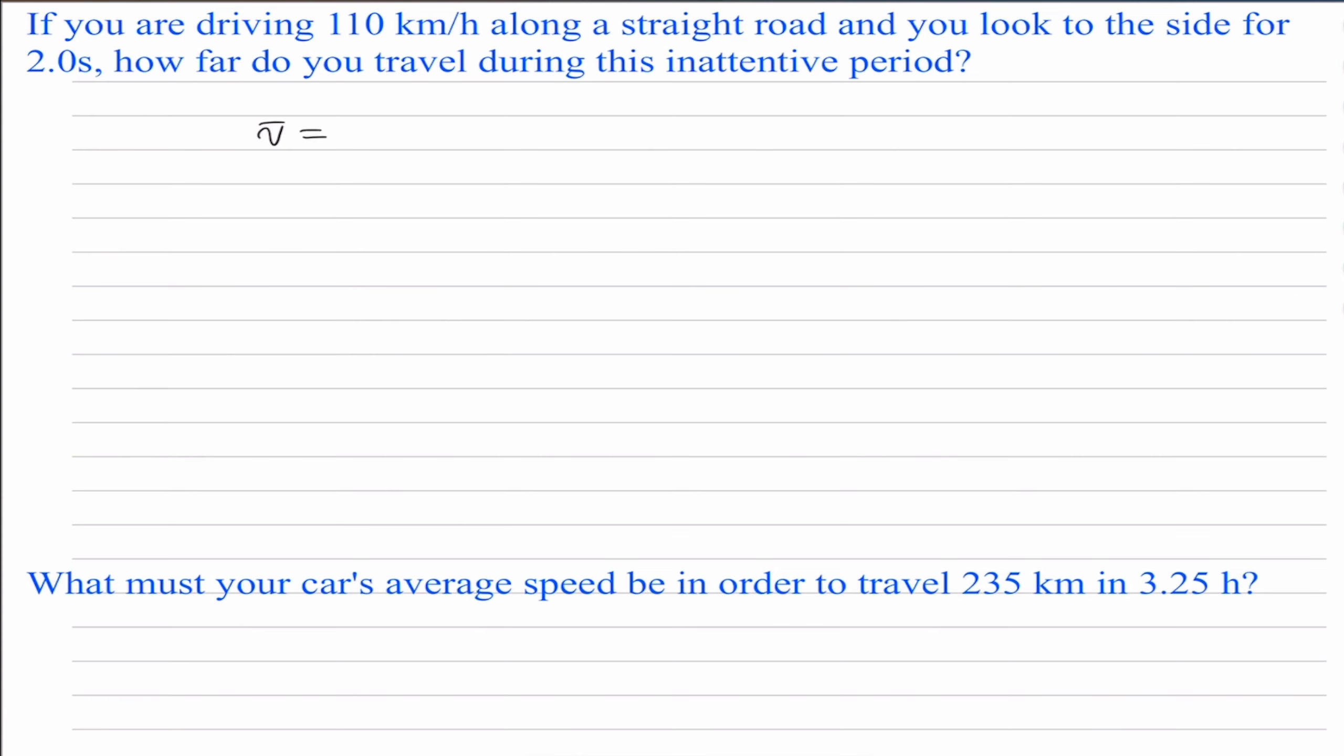So the average velocity is equal to the distance traveled or the displacement over the time it took to travel that amount of distance. Rearranging, we can find the displacement, which is equal to the average velocity times the change in time.